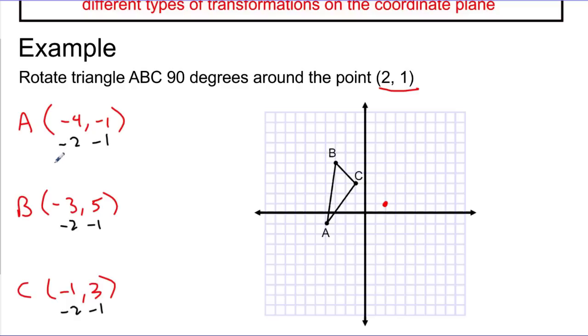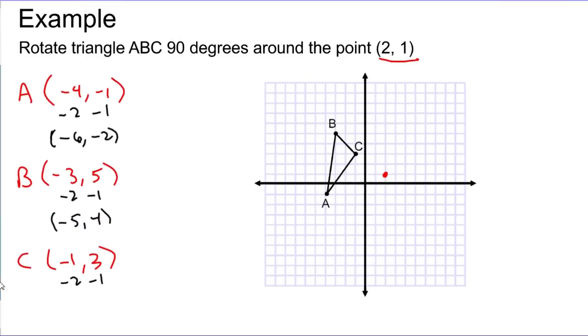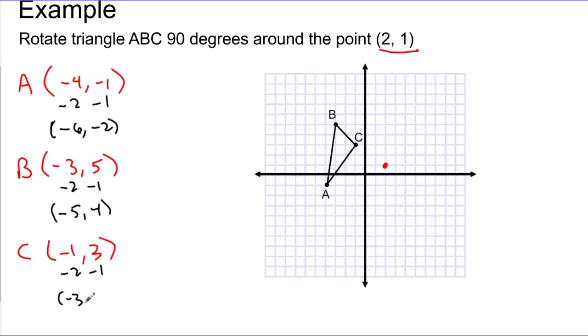So here's my interim point. I'm not even going to call it A prime because it's not A prime yet. We haven't done our rotation. So if I do -4 minus 2, I get -6. -1 minus 1, I get -2. And then I'm going to do that for each of these points. It looks like I get an interim point of (-5, 4). And my C is going to go to (-3, 2). So again, that's just kind of taking all these points and sliding them to the left by 2 and down by 1 so that my center of rotation can be at the origin.